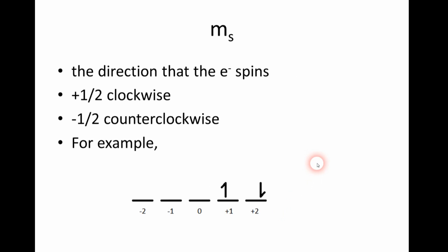M sub S, which is also called the spin quantum number, is the direction that the electron spins. If it's positive one-half, the electron would be spinning clockwise, and if it's negative one-half, it would be spinning counterclockwise.